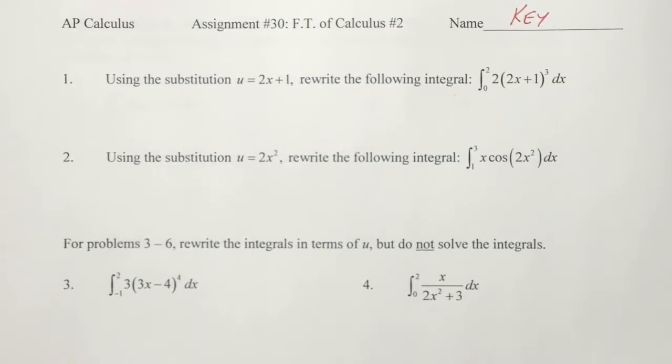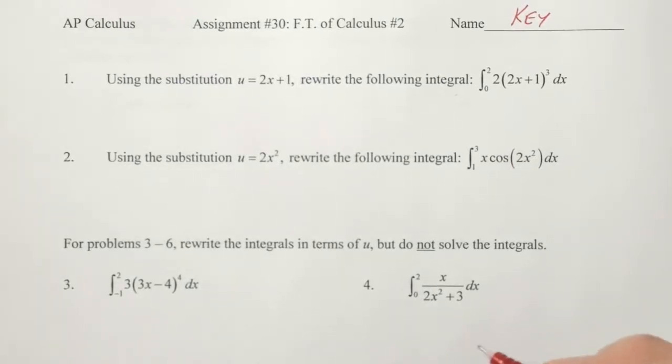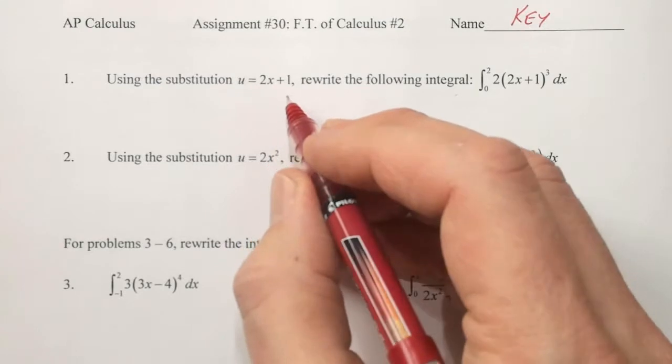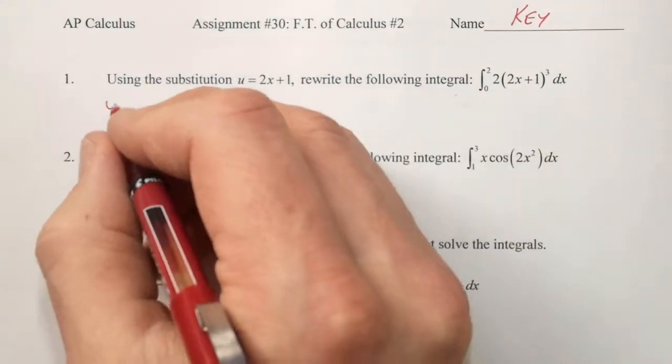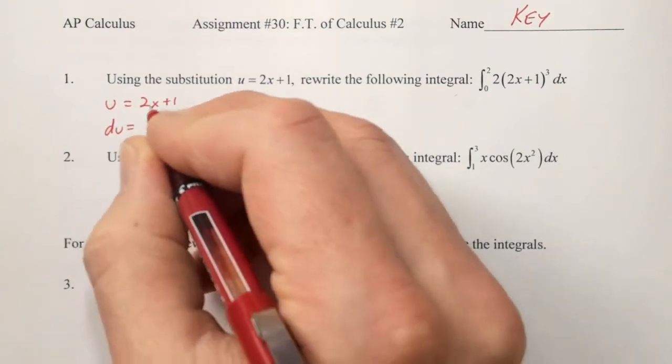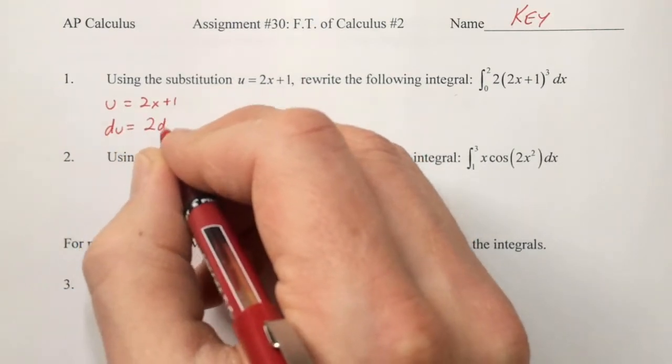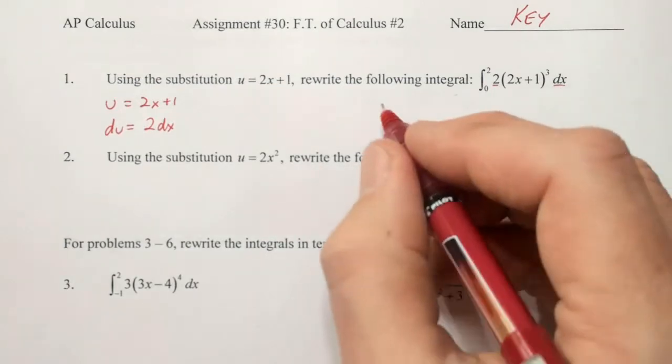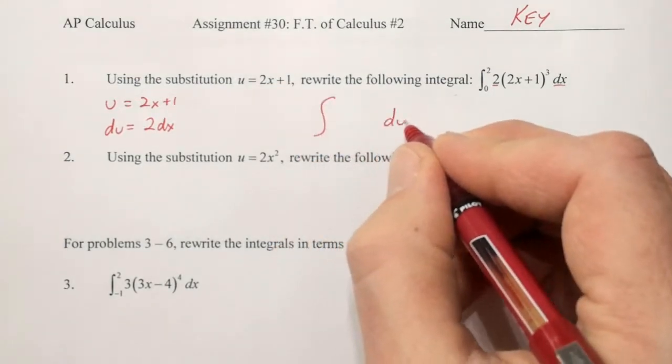Here's your key for assignment 30. For number one, we're told that u is equal to 2x plus 1. If u equals 2x plus 1, we can then find du. Take the derivative of u, which is 2dx. We have the 2 and we have the dx, so they are replaced by du.